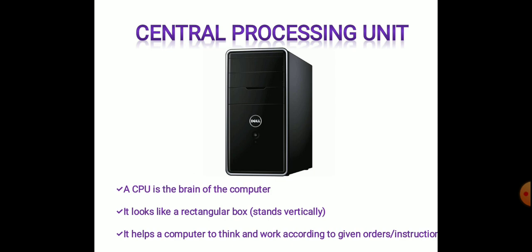Next, we are going to see about the CPU — the central processing unit. A CPU is the brain of the computer. It looks like a rectangular box that stands vertically. It helps a computer to think and work according to given orders or instructions.